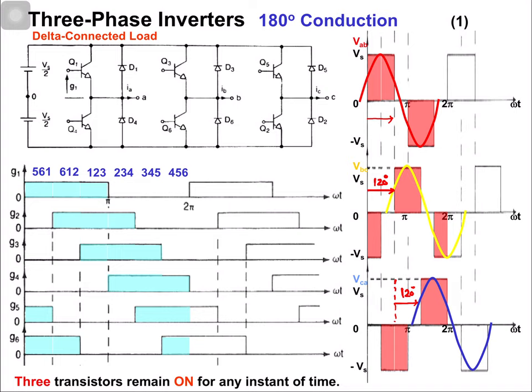As discussed in previous videos, we can analyze this line voltage waveform using Fourier series representation. The Fourier series for line voltage vab can be represented as: (4Vs / nπ) × sin(nπ/3) × sin(nωt + nπ/6), because this waveform is 30 degrees advanced with respect to the quasi-square waveform discussed in previous videos.